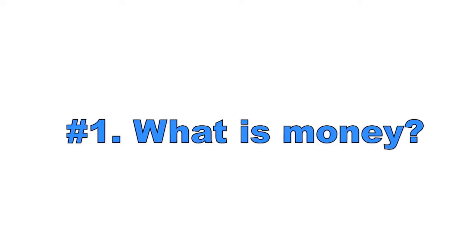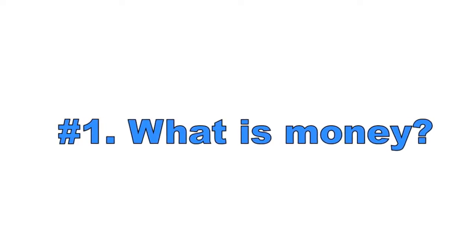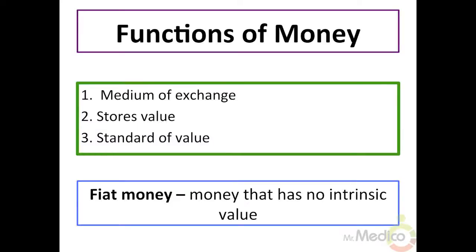Number one: what is money? Money should contain several qualities for it to be efficient for an economy. For example, money should be accepted, convenient, portable, and divisible. Here is a list of the three key functions of money: one, a medium of exchange — it buys you things; two, stores value — it holds its worth over time; three, standard of value — it is a measuring tool of wealth.